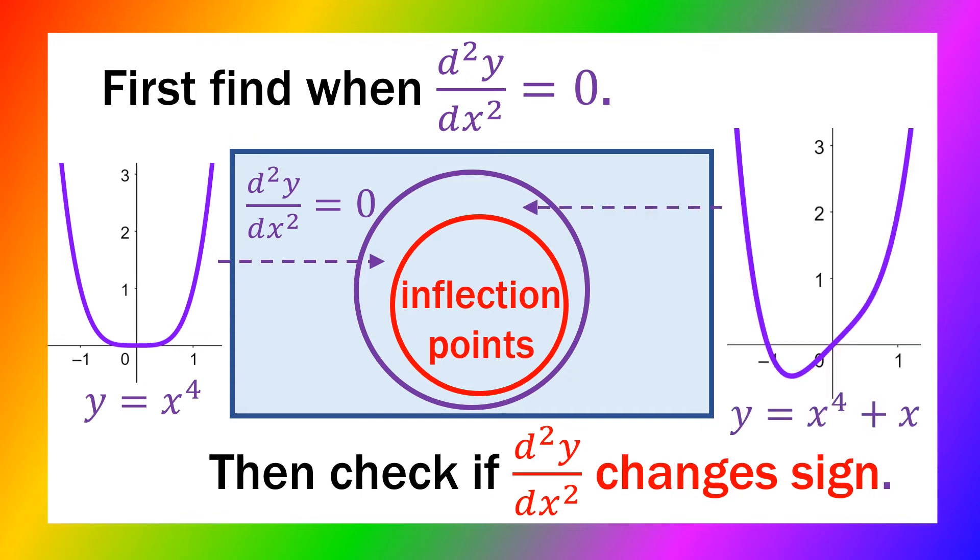Here's another example. Again, at the origin, the second derivative is zero. The first derivative is not. But again, it's always concave up. The concavity never changes. No point of inflection.